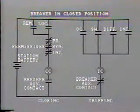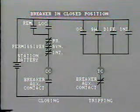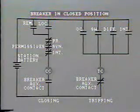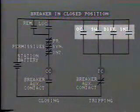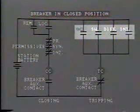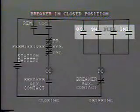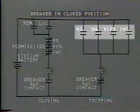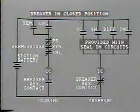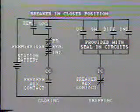To trip the breaker open, the tripping circuit must be energized. In the case of a tripping circuit, instead of permissive contacts in series, we'll find several pairs of contacts in parallel. Look at these tripping contacts: overcurrent relay, manual switching, differential relay, remote inter-trip. Closing any one of these pairs will energize the tripping circuit and open the circuit breaker. Often these tripping contacts are provided with seal-in circuits, as discussed in the previous segment.